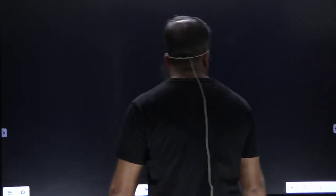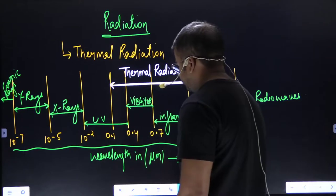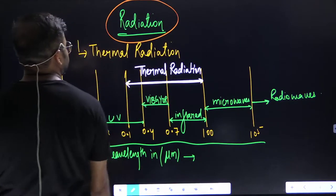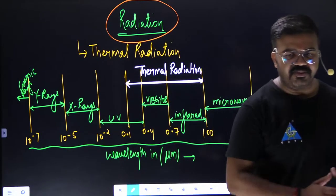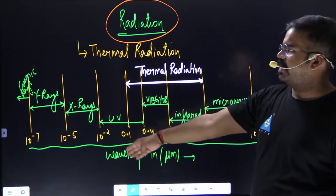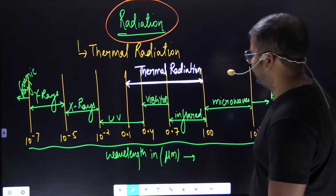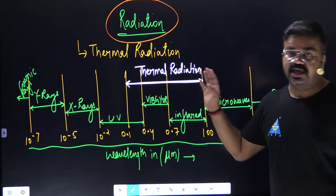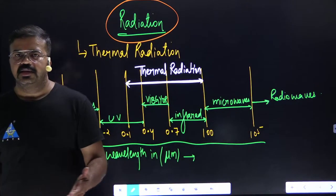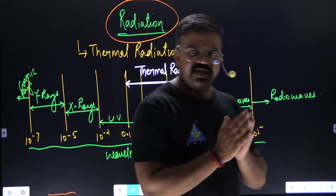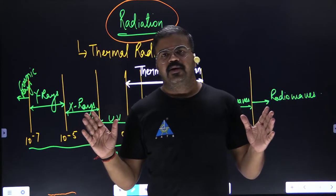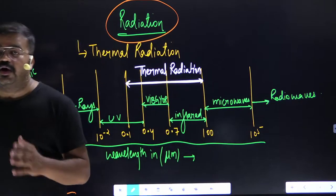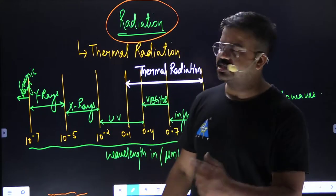We know what radiation is. But in radiation there are many segments: cosmic rays, gamma rays, X-rays, ultraviolet, visible, infrared, microwaves, radio waves. But in heat transfer, we study thermal radiation only. What is thermal radiation? Thermal radiation is that fraction of the entire spectrum of radiation which is related to heat transfer or which causes heat to transfer or which leads to temperature change.